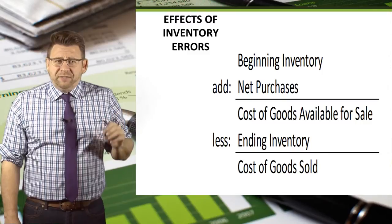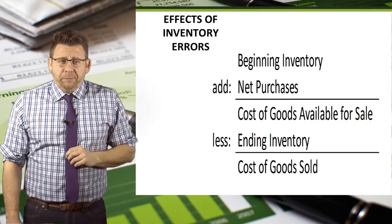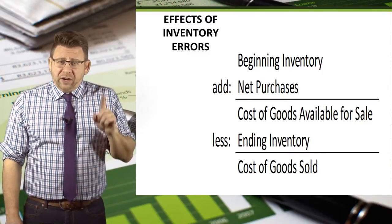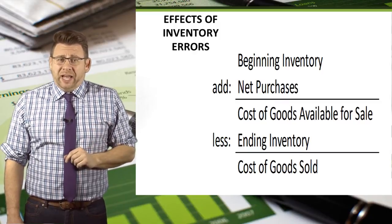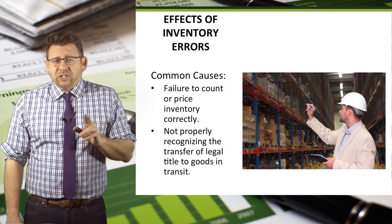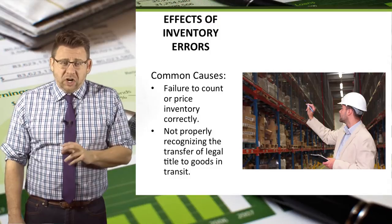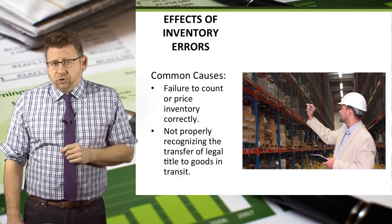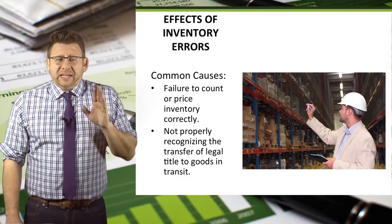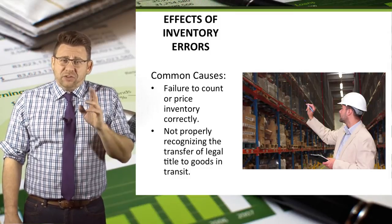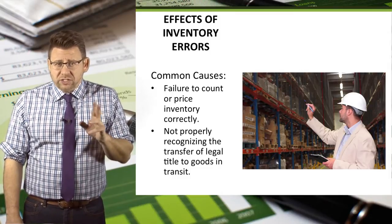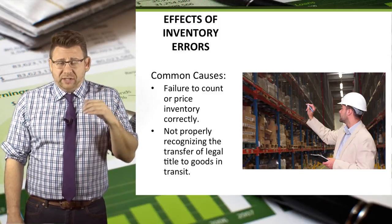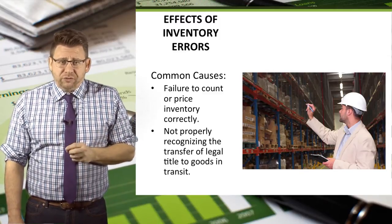An overstatement of ending inventory would cause cost of goods sold to be too low, and therefore net income would be too high. The two most common causes of inventory errors are failure to count or price inventory correctly, and not properly recognizing the transfer of legal title in goods in transit. This second issue relates to FOB shipping point and FOB destination transactions.